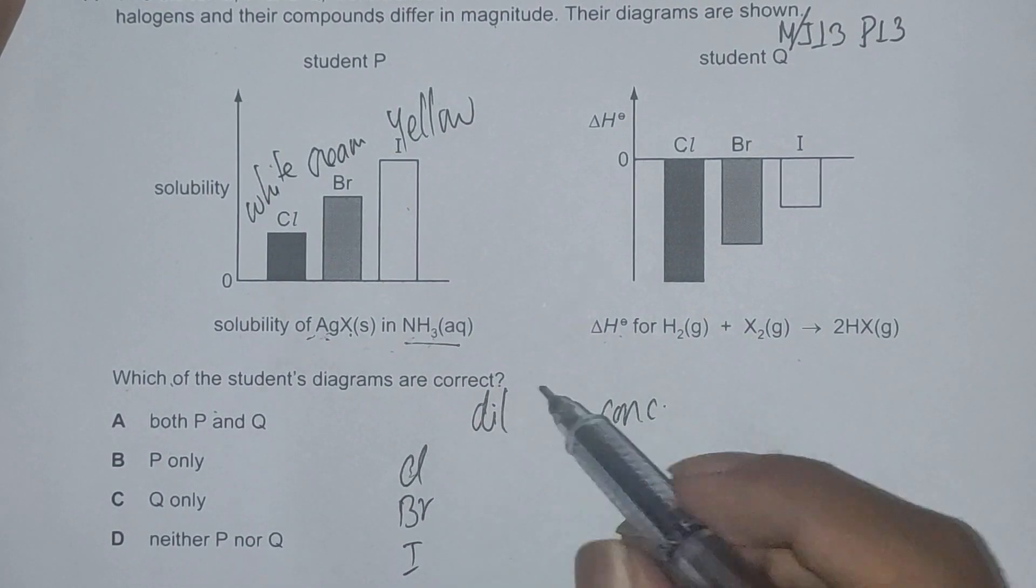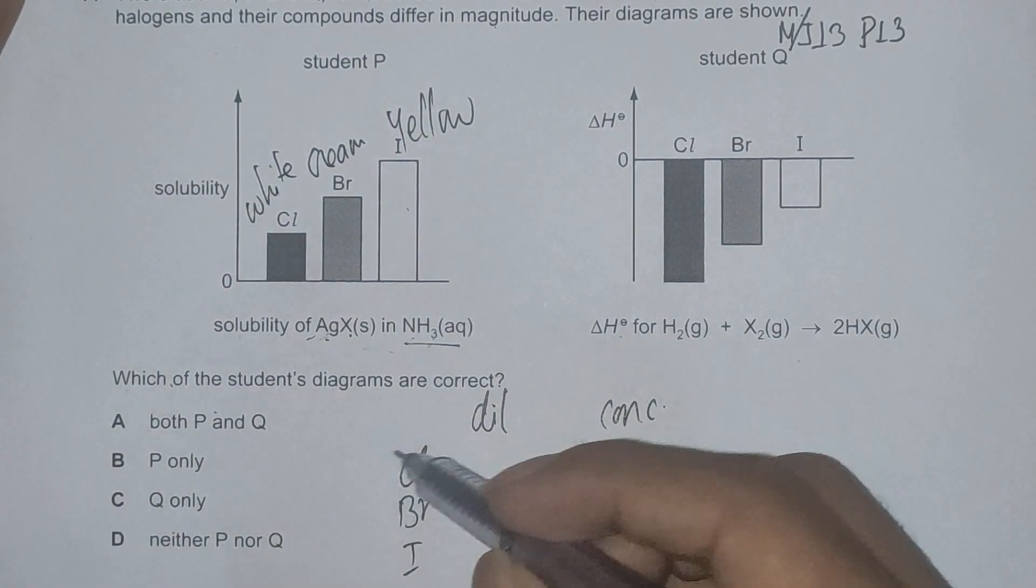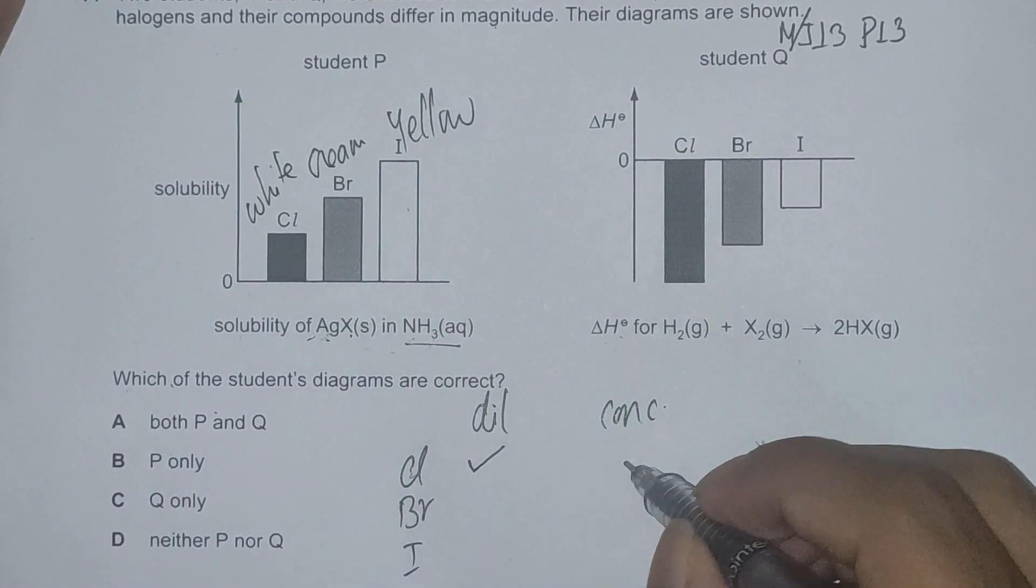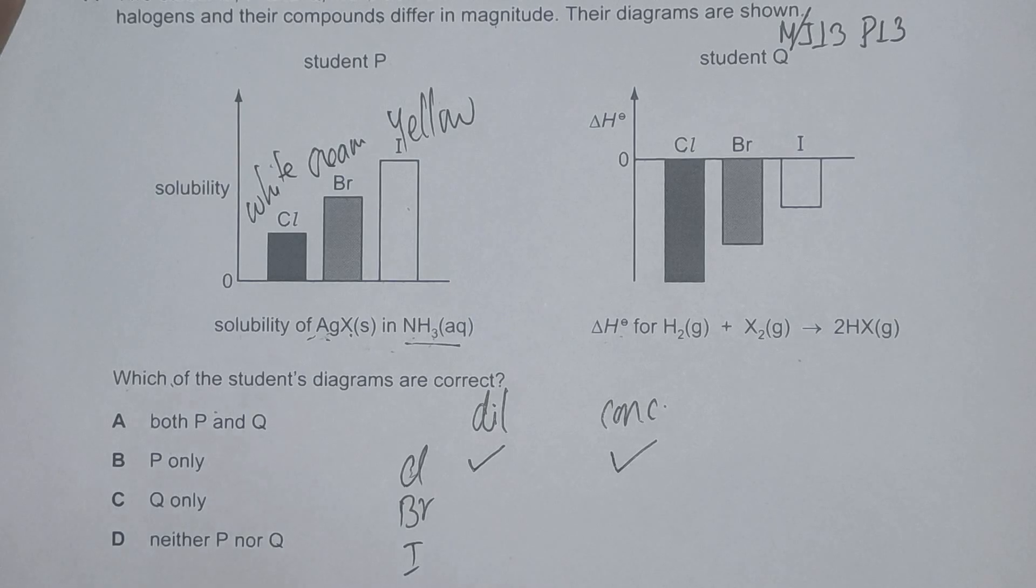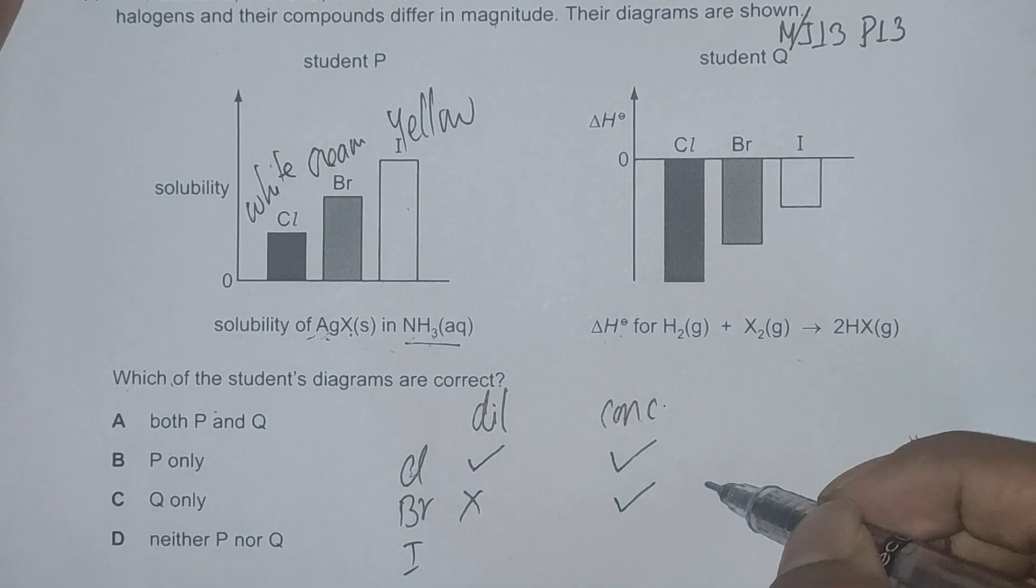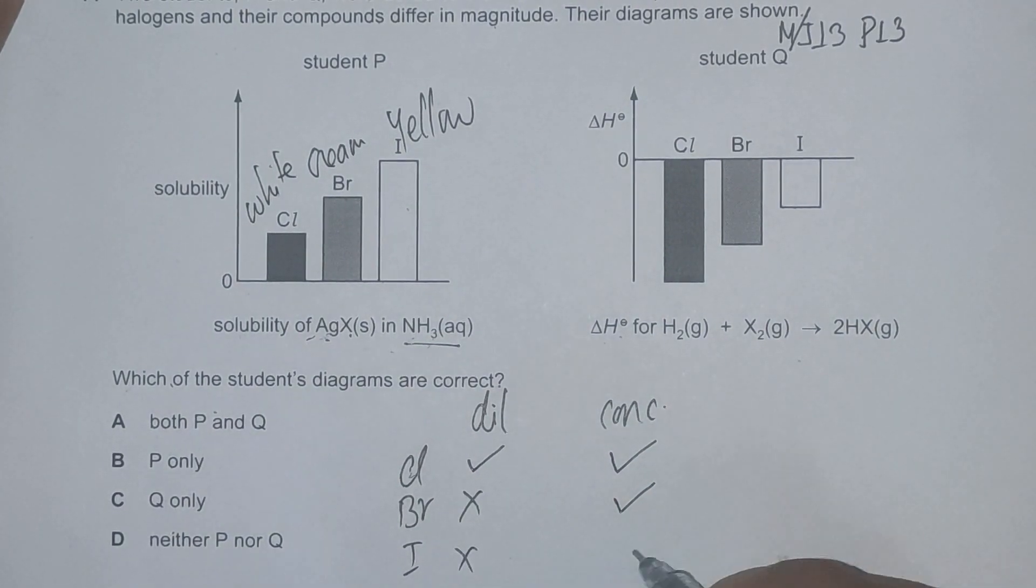When we add dilute ammonia to chlorine, the solution dissolves. It's fully soluble and the same goes for concentrated. For bromine, it's insoluble in dilute ammonia and soluble in concentrated ammonia. And for iodine, it's insoluble in both.